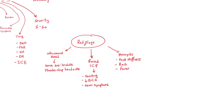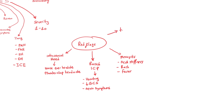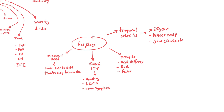The last red flag I'd like to cover is temporal arteritis, which is very common in patients over 55. The main features are a tender scalp and jaw claudication. These are the main red flags to keep an eye on when taking a headache history.